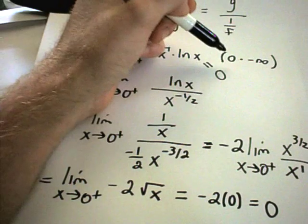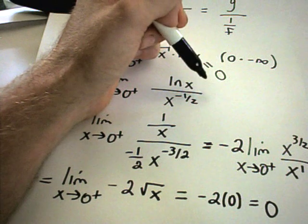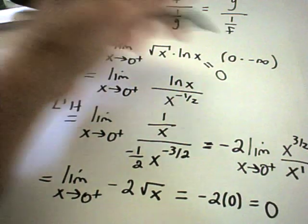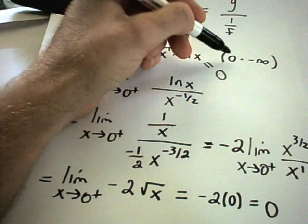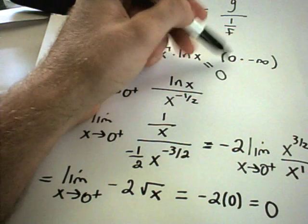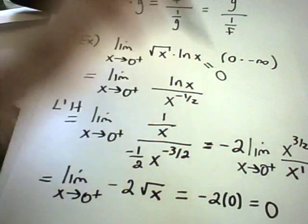And again, be careful. 0 times negative infinity, you can't conclude that it equals 0. All it says is one thing is getting small, one thing is getting big. Well, in this case, the small thing is getting small faster.